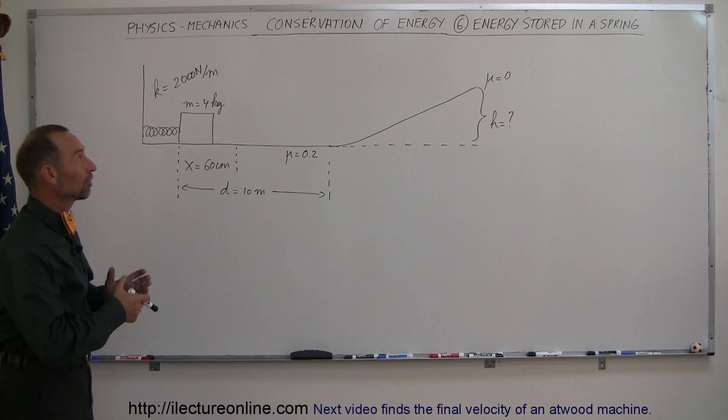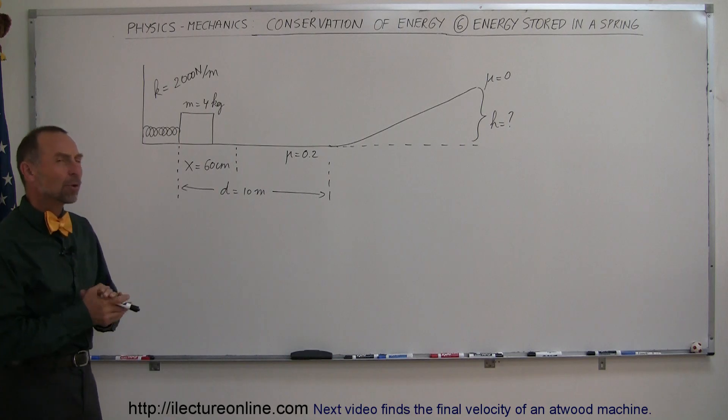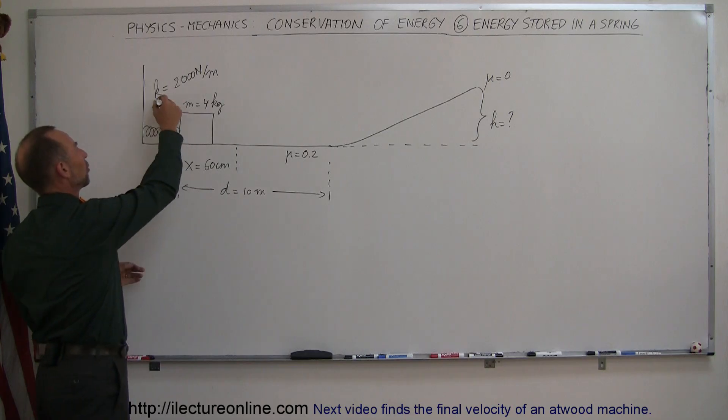Here's our next example of how to use conservation of energy to solve problems in physics. We have a more complicated problem. If you compare that to the previous one, we still have a spring that has a spring constant,